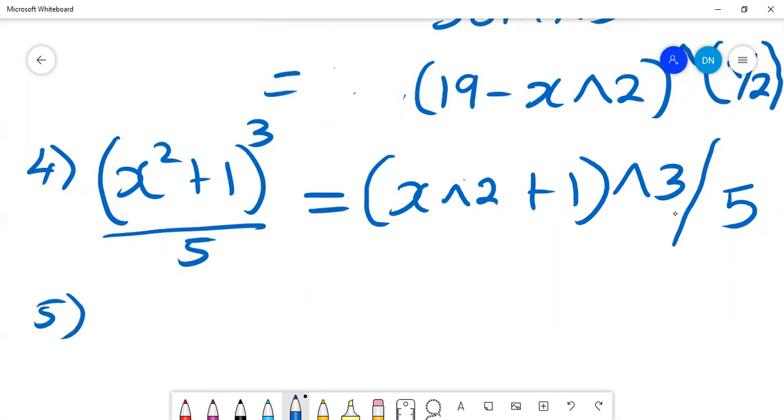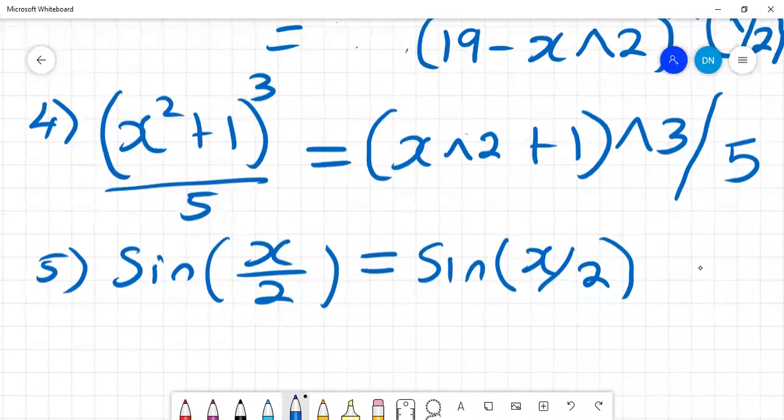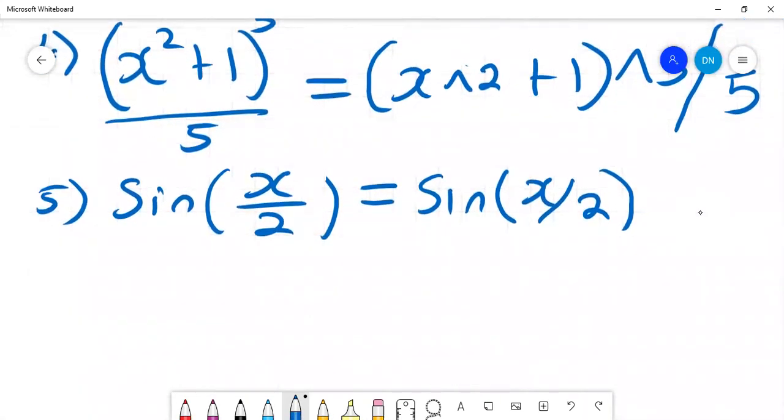If I have an equation like sine of x over 2, then how do I write that? It's very important how we write it. Let me just rewrite this in a slightly different fashion. I'll just say sine of x over 2.